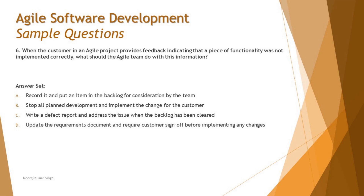Moving on to Question 6: When a customer in an agile project provides feedback indicating that a piece of functionality was not implemented correctly, what should the agile team do? This is a tricky one. The customer is not happy with what was delivered — either the acceptance criteria were not met or the functionality was not understood by the team. The key question is: what should the team do with this information?